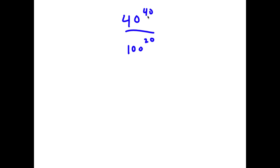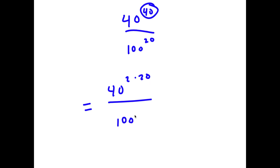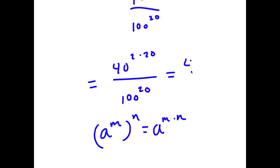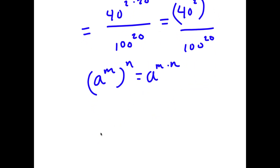In this problem I have 40 to the power of 40 over 100 to the power of 20. To solve this I'm going to rewrite 40 as 2 times 20, so I have 40 to the power of 2 times 20. Using the rule a to the power of m to the power of n equals a to the power of m times n, this can be written as 40 to the power of 2 to the power of 20. Now 40 squared is 1600, so I have 1600 to the power of 20 over 100 to the power of 20.